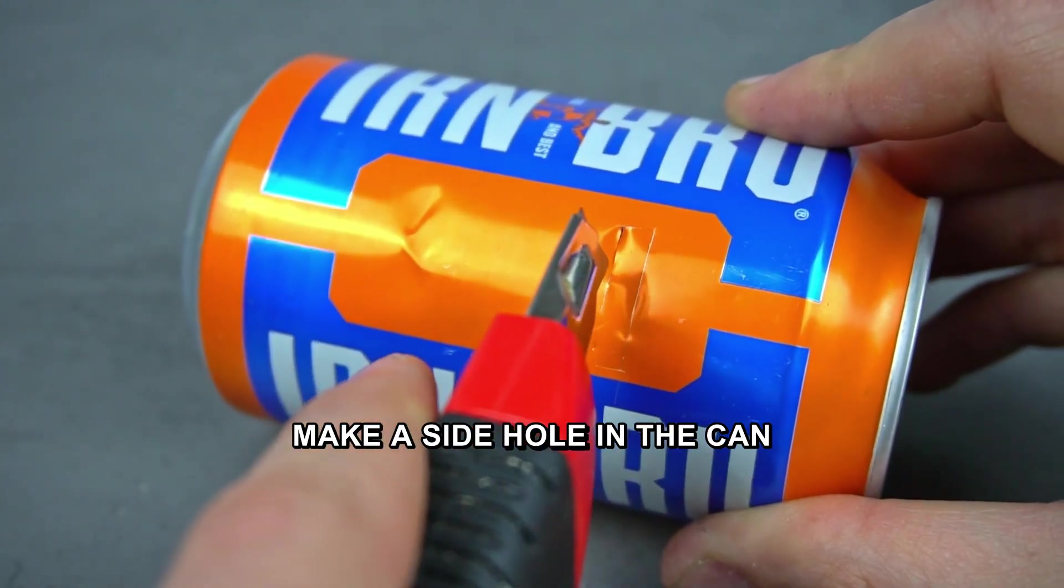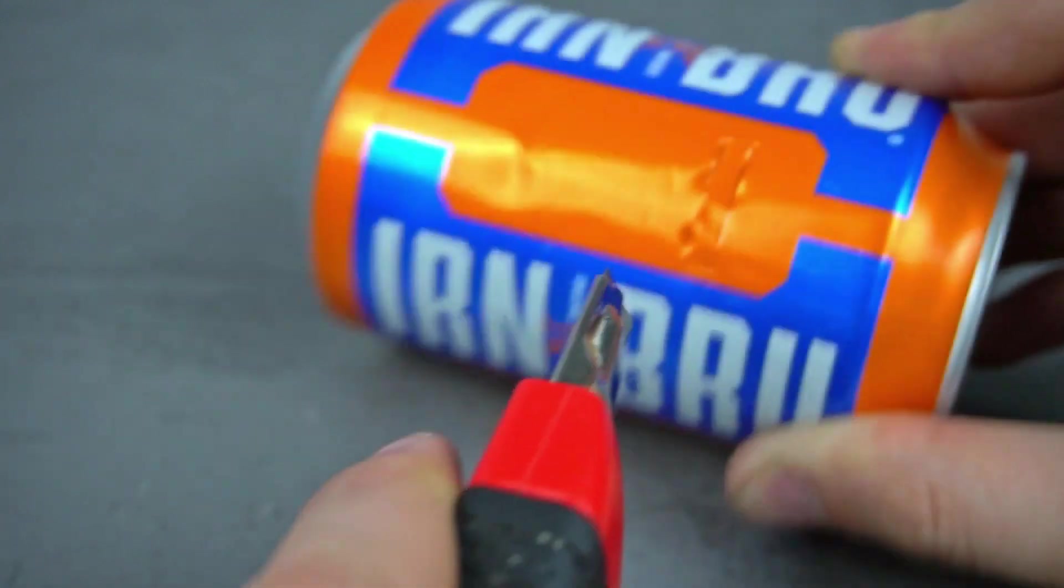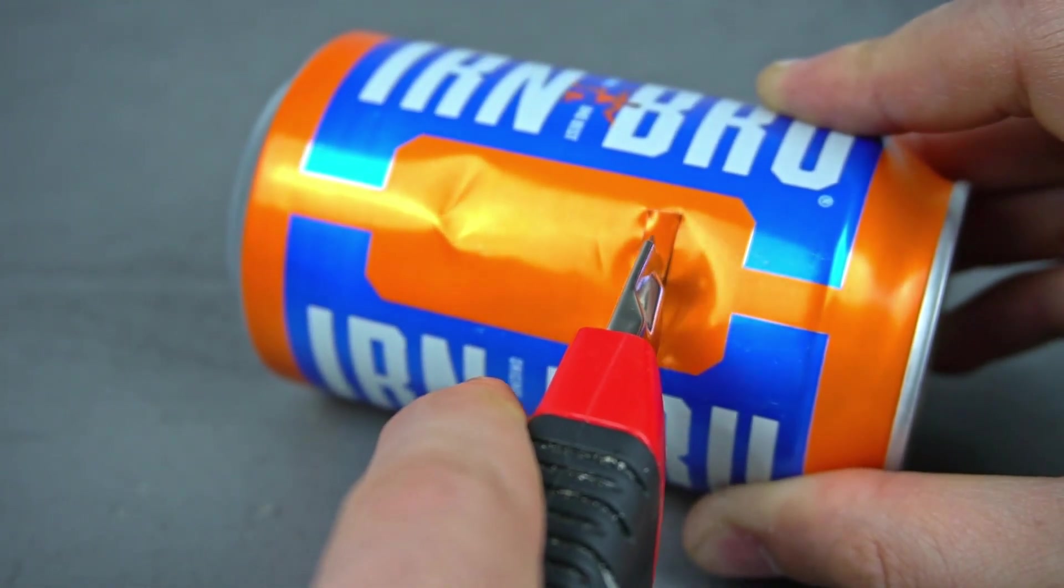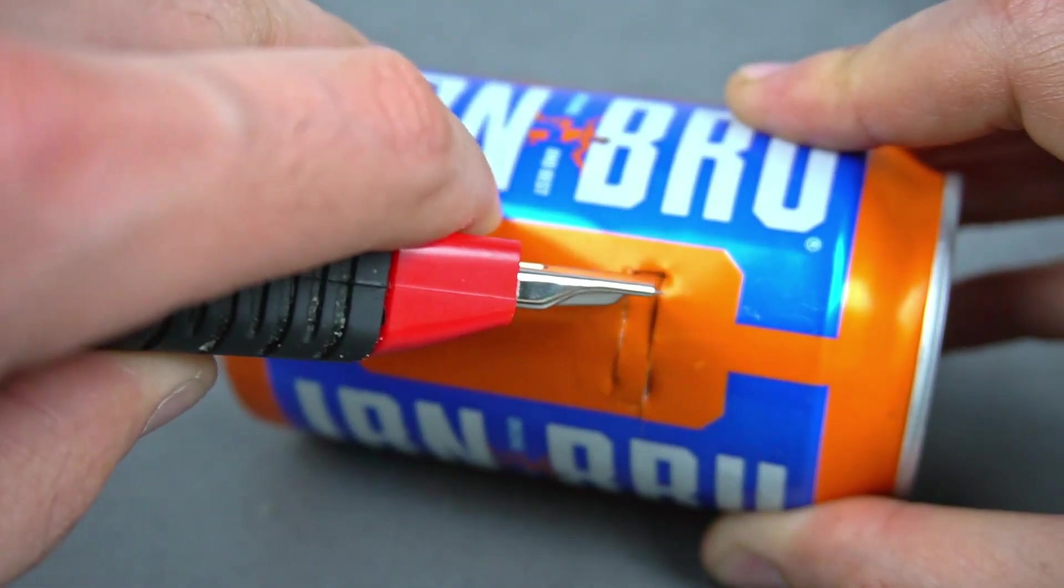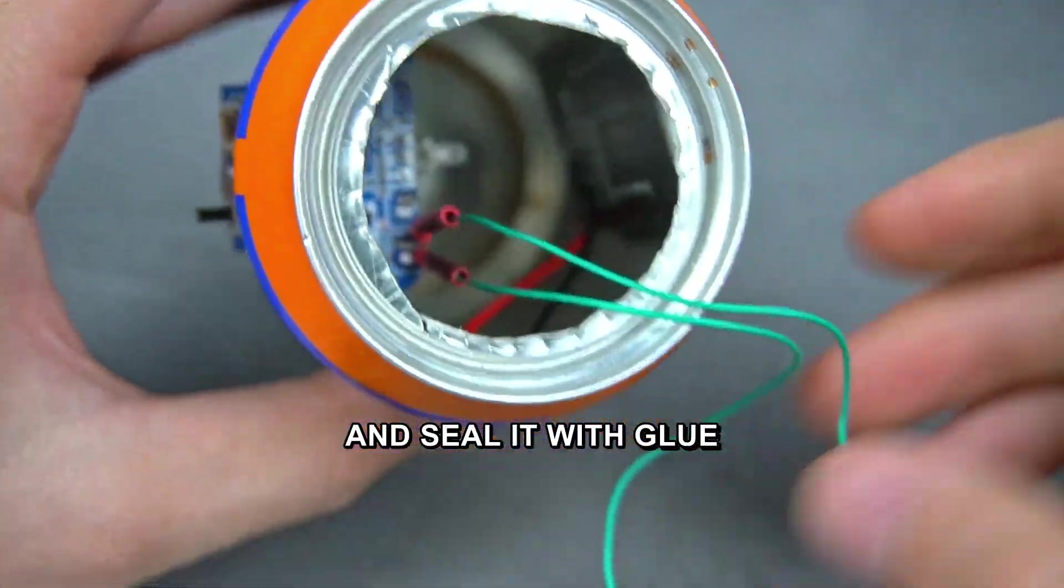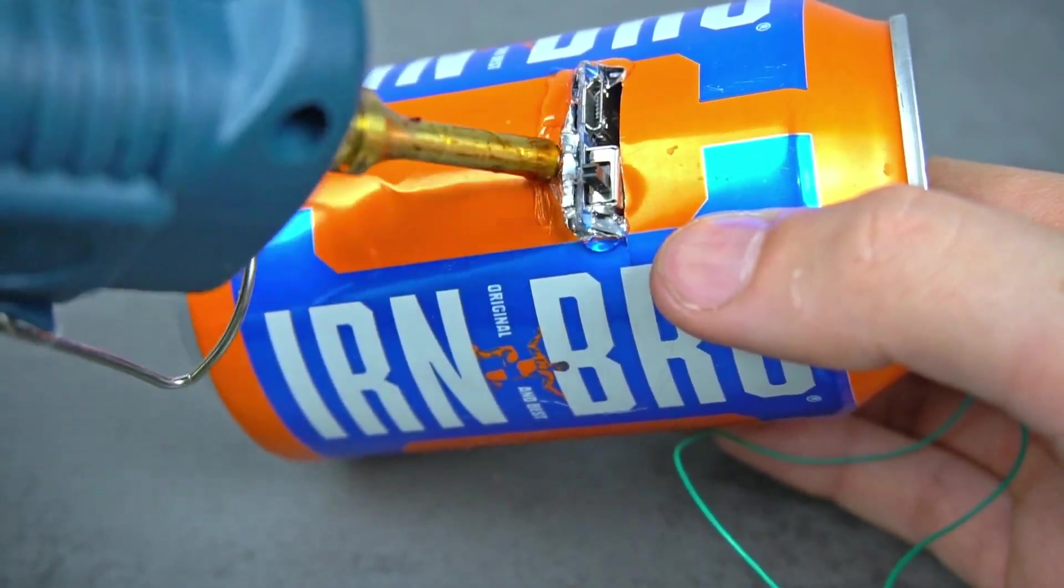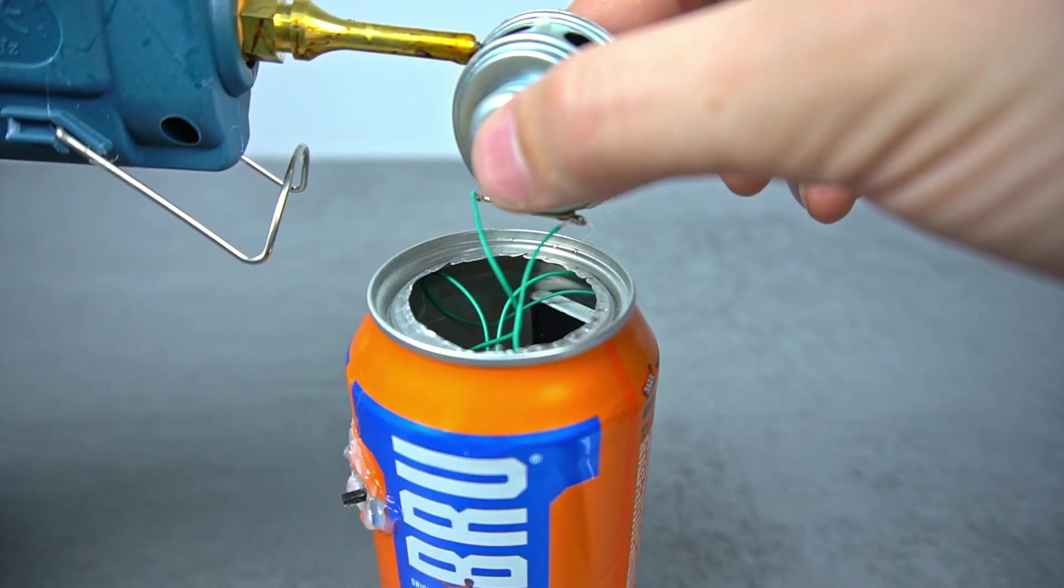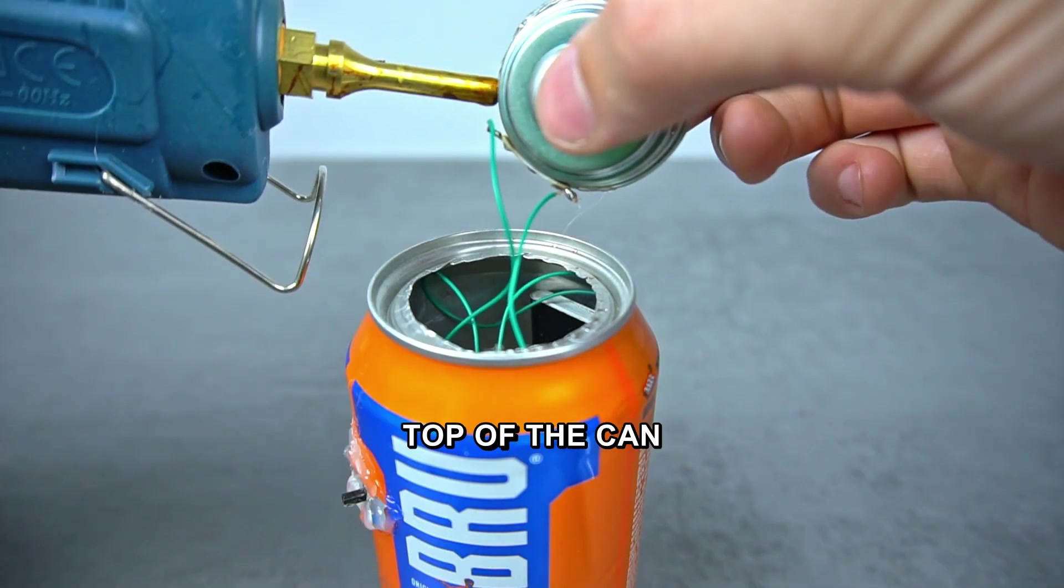Make a side hole in the can. Insert the Bluetooth module into the hole and seal it with glue. Securely attach the speaker to the top of the can.